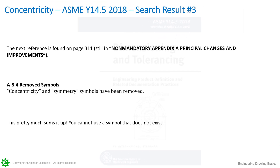Next up is search result number three, found on page 311, still in the non-mandatory Appendix A, Principle Changes and Improvements. A-8.4, Removed Symbols. Concentricity and symmetry symbols have been removed. If you had any confusion up to this point — we saw that the definition is gone, and this one states that the symbols are gone. You can't use a symbol that's no longer there. So now when referencing the 2018 standard, anytime we want something to be coaxial, we will be using either runout or position if we're talking about a feature of size. Profile of a surface is still an option if appropriate for the design, but for most cases it's going to be runout or position tolerance.